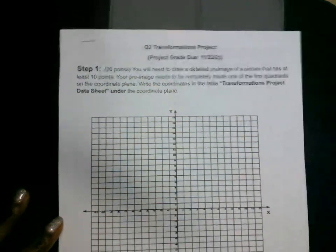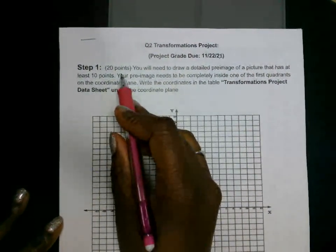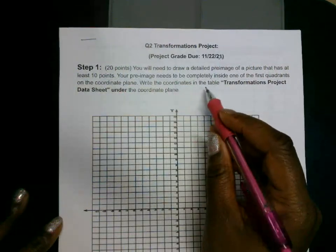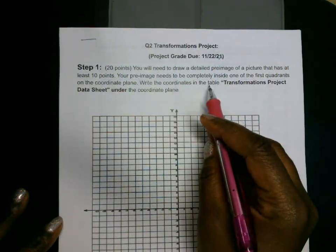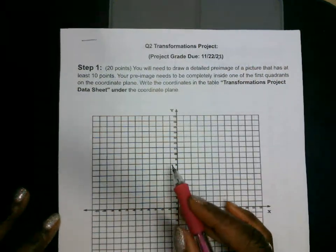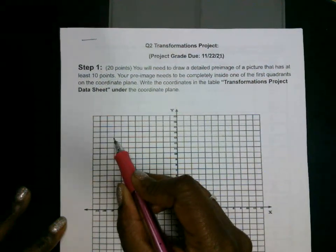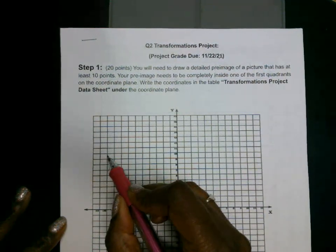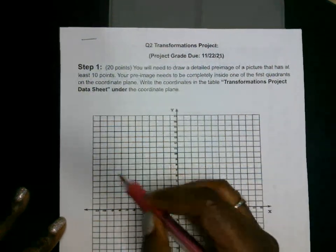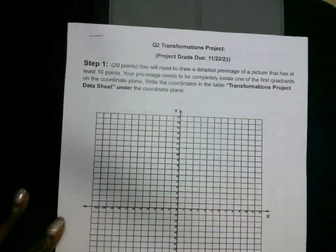Each step is worth a certain number of points. This first step is going to be worth 20 points. You will need to draw a detailed pre-image of a picture that has at least 10 ordered pairs.